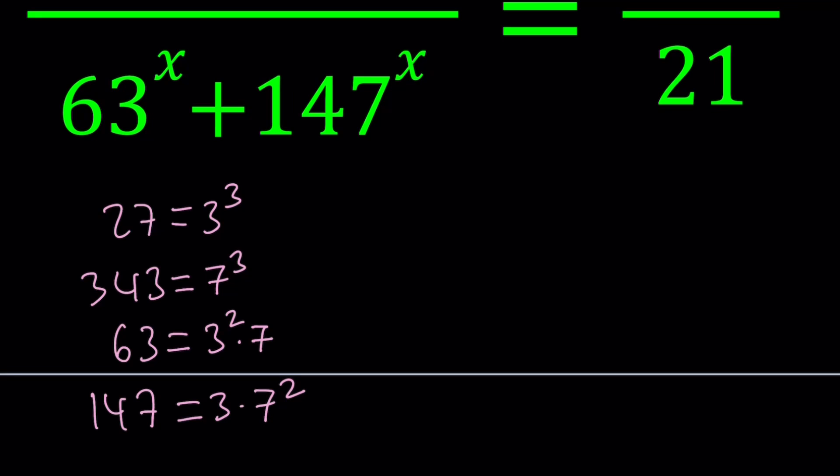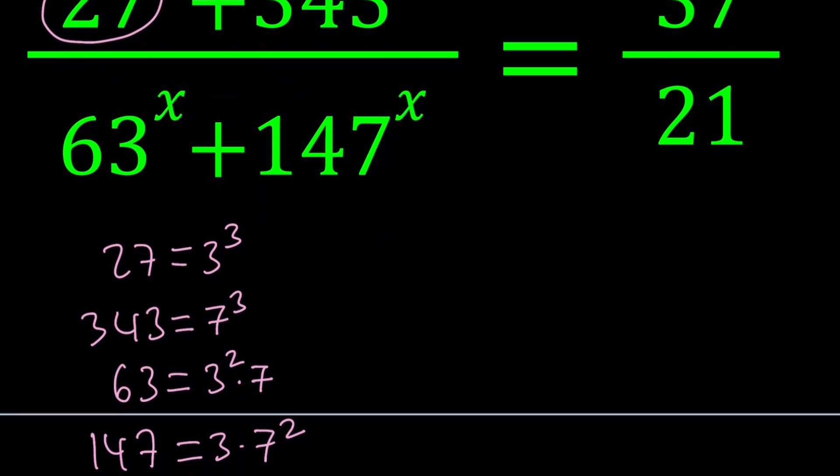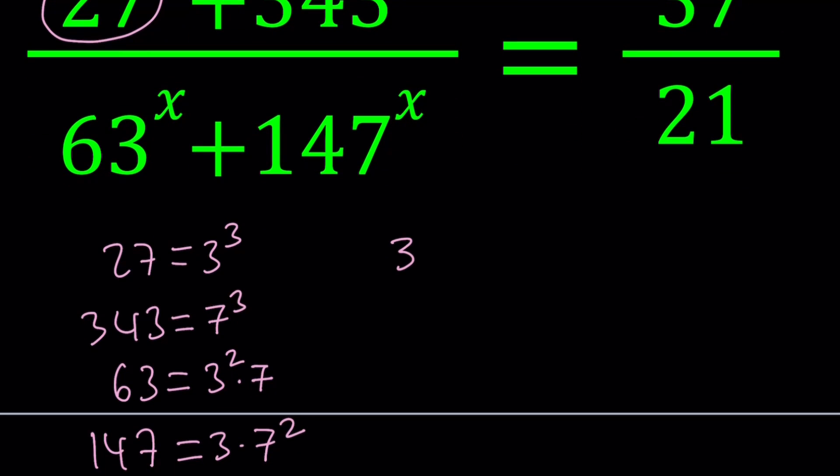Let's see how we can solve this by using the prime factorizations. I'm going to replace 27 with 3^3, giving me 3^(3x). And then 343 with 7^3, giving me 7^(3x).